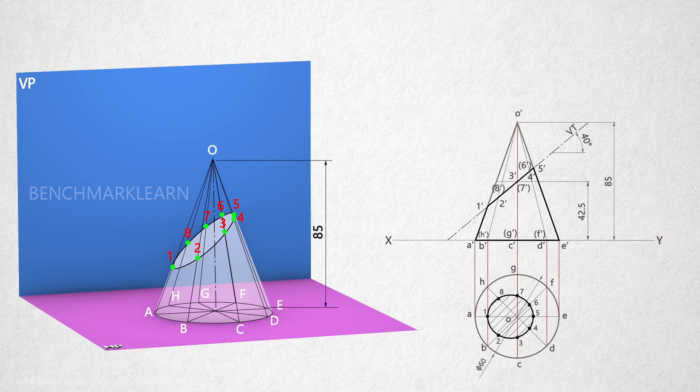For drawing the true shape of the section, draw an additional plane or auxiliary plane X1Y1 parallel to VT of the cutting plane at any distance.